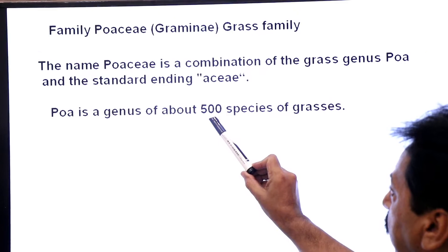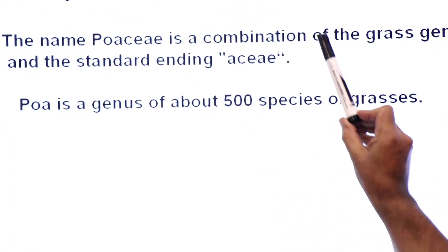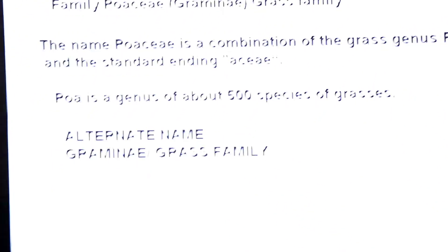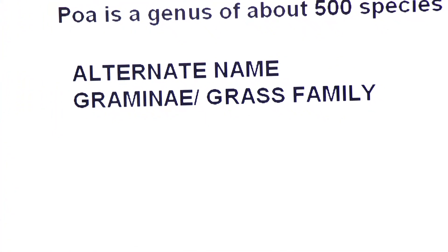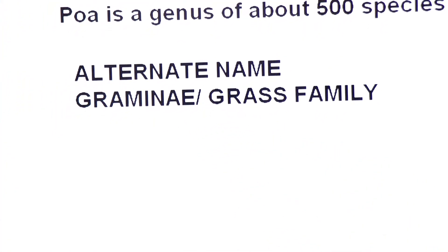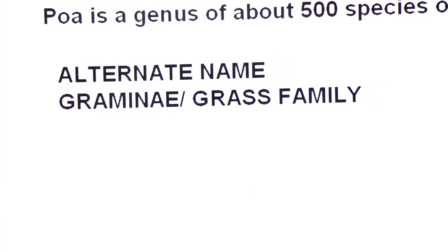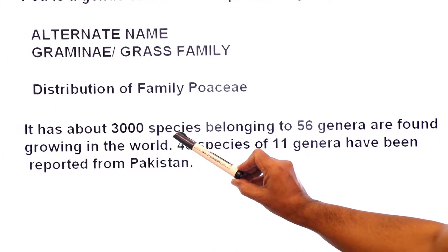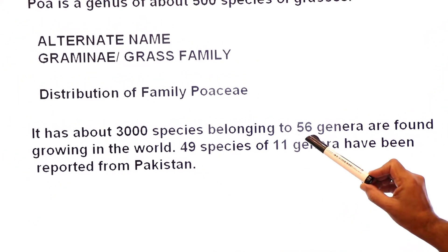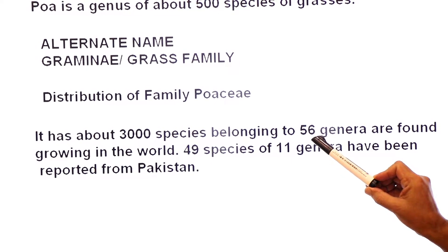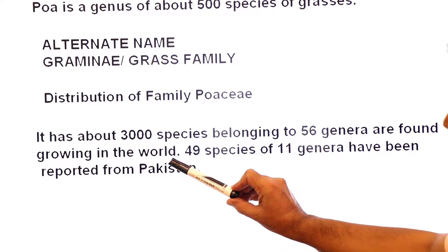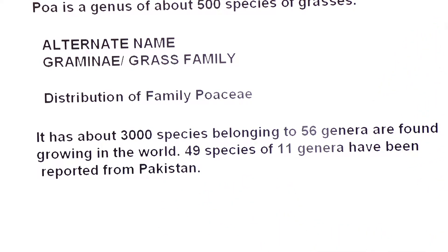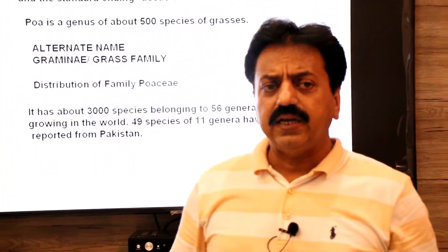Poa is a genus of about 500 species of grasses. It is also called the grass family, with the alternate name Family Gramineae. Regarding the distribution of Family Poaceae: about 3000 species belonging to 56 genera are found growing all over the world. In Pakistan, 49 species of 11 genera have been reported.